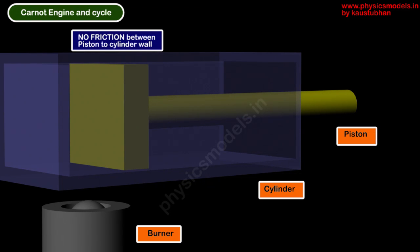Hi, welcome to this video. I'll be explaining the Carnot engine and Carnot cycle. There are a few parts in this arrangement: a cylinder in blue color which holds the gas in the enclosed space, a piston in yellow color which can slide in and out without any friction, and a burner to provide heat.